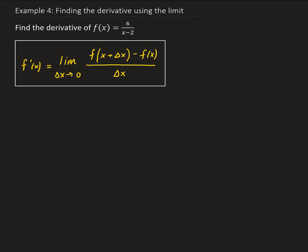We're going to evaluate our function at x plus delta x. That's going to give us 6, all divided by x plus delta x minus 2.